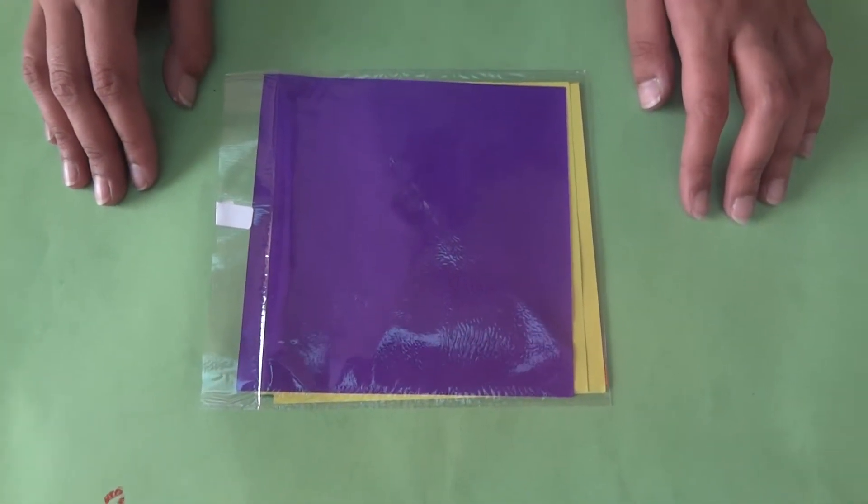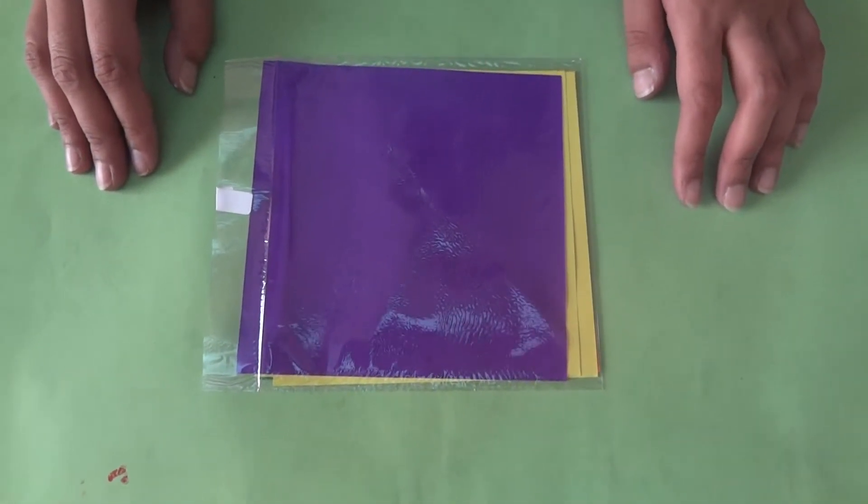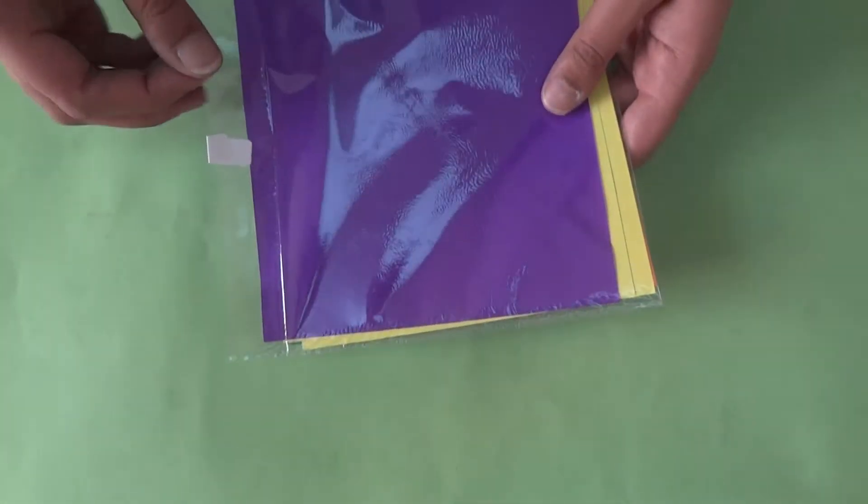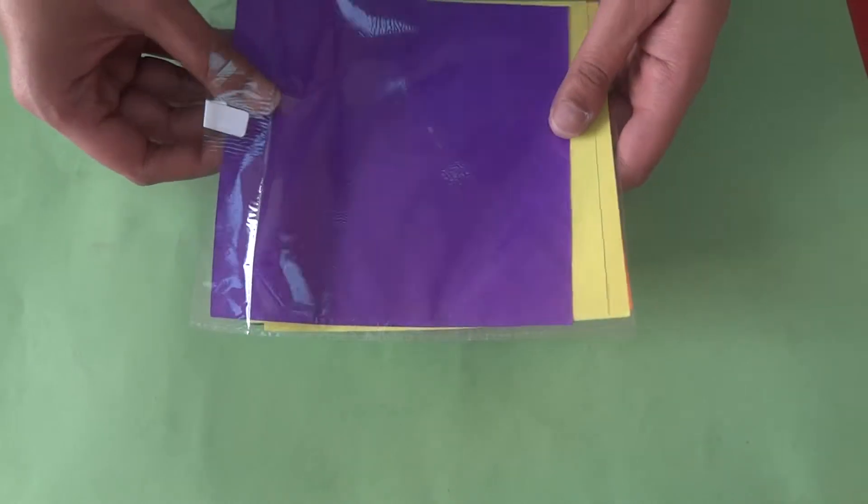Origami is a Japanese art of folding paper into different shapes and figures. You have been given these origami papers. Let us make the origami of a penguin.